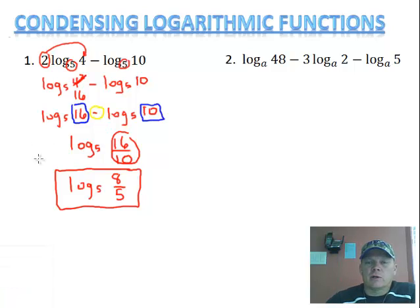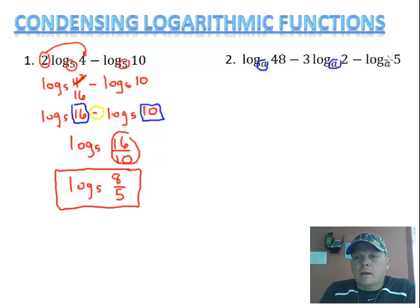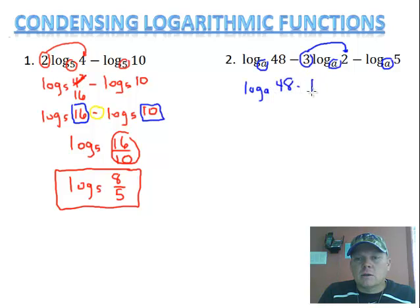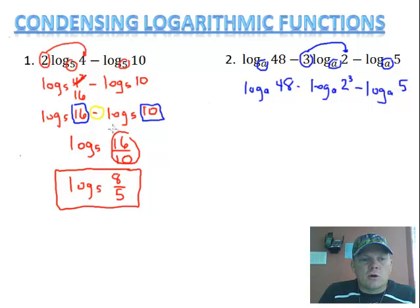Problem number 2. Notice I have log base a, log base a, and log base a, so I'm going to be able to condense these. Let's take any coefficients and move those as exponents. This 3 needs to move as an exponent for the 2, and that's the only one that has a coefficient. So I'm going to rewrite this as log base a of 48 minus log base a of 2 to the 3rd minus log base a of 5. Now 2 to the 3rd can be rewritten as 8 — 2 times 2 is 4, times 2 is 8.